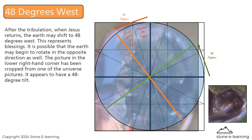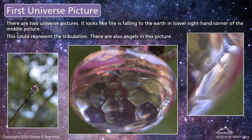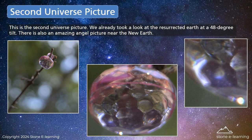After the tribulation, when Jesus returns, the earth may shift to 48 degrees west — this represents blessings. It is possible that the earth may begin to rotate in the opposite direction as well. A picture in the lower right-hand corner has been cropped from one of the universe pictures and appears to have a 48-degree tilt. There are two universe pictures. In the first, it looks like fire is falling to the earth in the lower right-hand corner — this could represent the tribulation, and there are also angels in this picture. The second universe picture shows the resurrected earth at a 48-degree tilt, along with an amazing angel picture near the new earth.